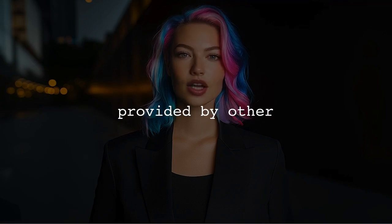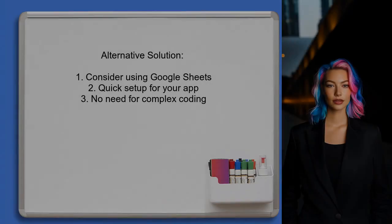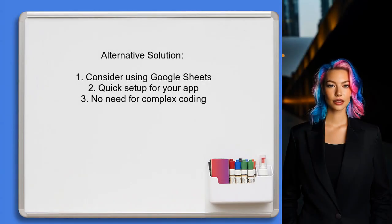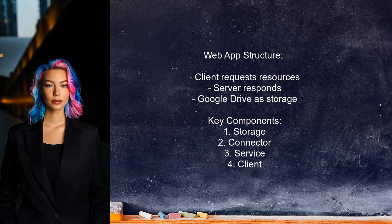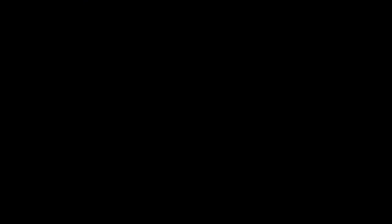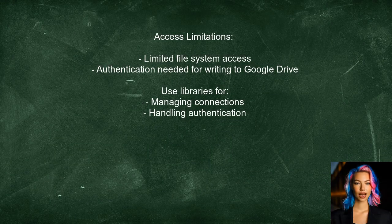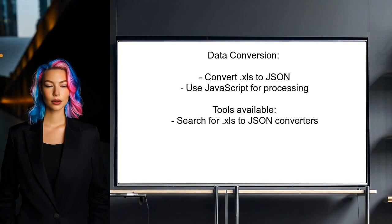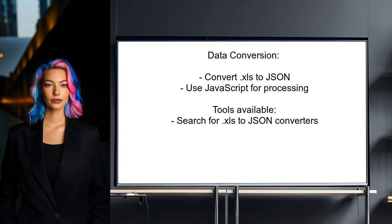Now let's look at answers provided by other users. An alternative approach suggests using Google Sheets instead of Excel for your app, as it could meet your needs quickly and easily. They explain how web apps function, highlighting the roles of the client and server — the client requests resources while the server responds, and Google Drive can serve as your storage. Note that a web client has limited access to the file system and may require authentication to write to Google Drive. They recommend using libraries to manage this connection, and mention the need to convert XLS data into a format that JavaScript can work with, suggesting tools that can convert .xls to JSON.